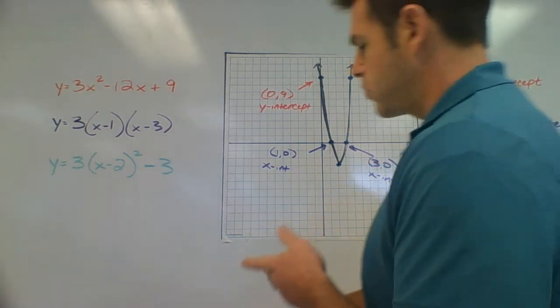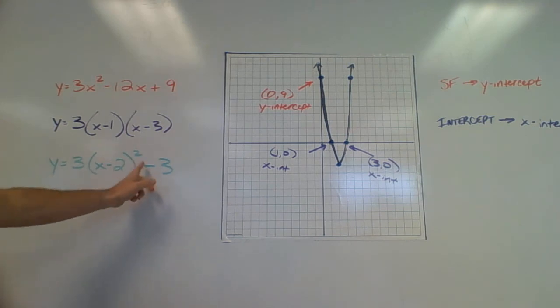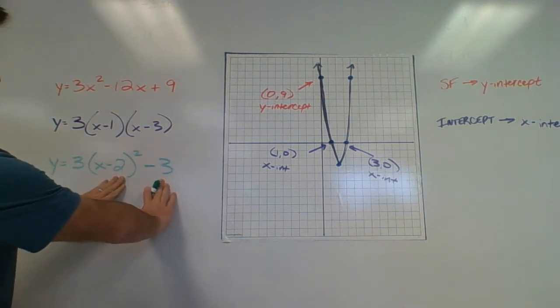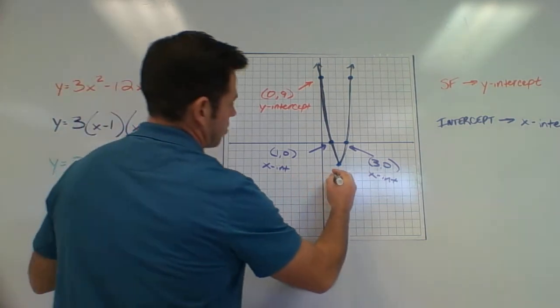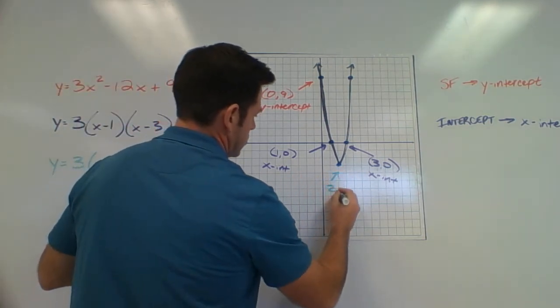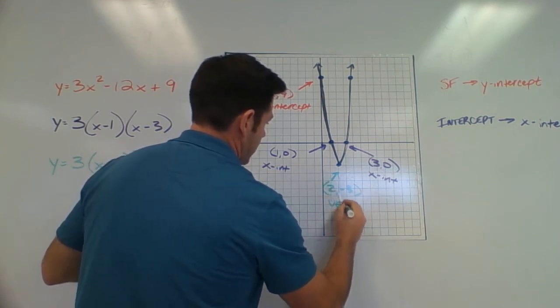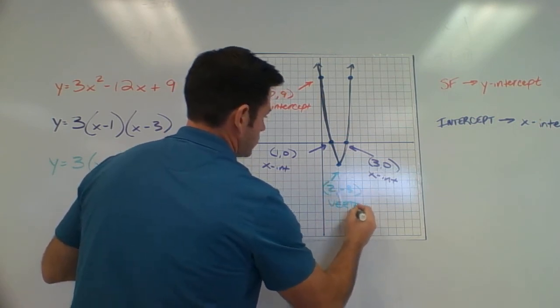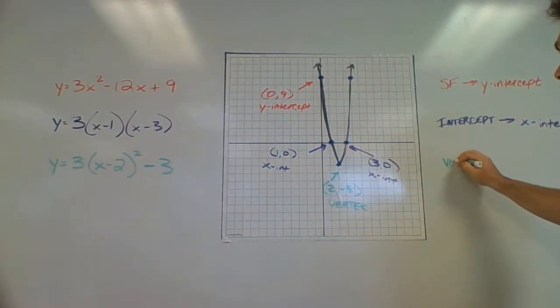Finally, let me talk about the green one here. I've got y is equal to 3 times quantity x minus 2 squared minus 3. And that's vertex form for us. And hopefully we can take a look at this right here and understand how we have a vertex at the point 2 comma negative 3. 2 comma negative 3 is our vertex. So it's pretty straightforward here, but we know that our vertex form will give us the vertex.